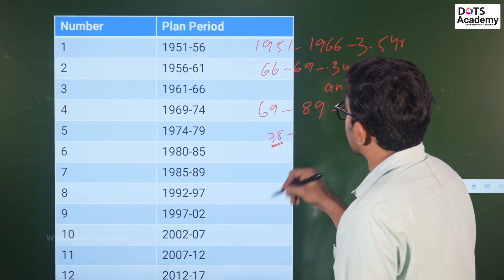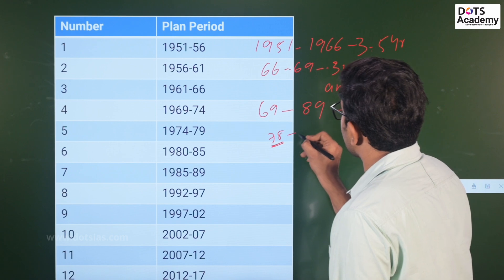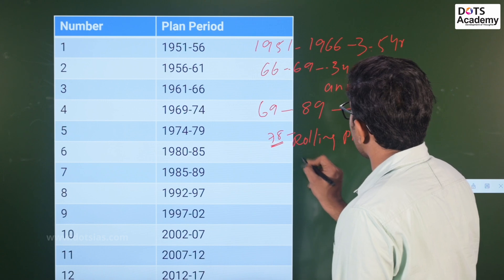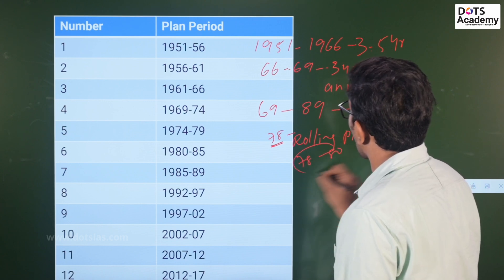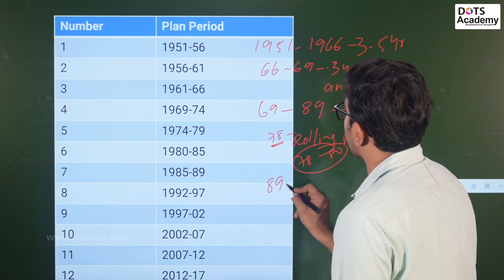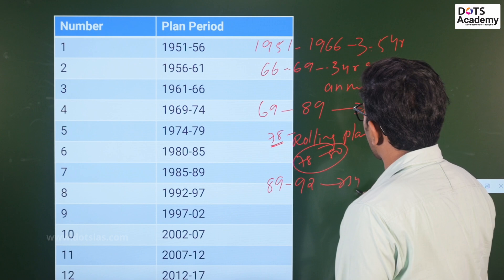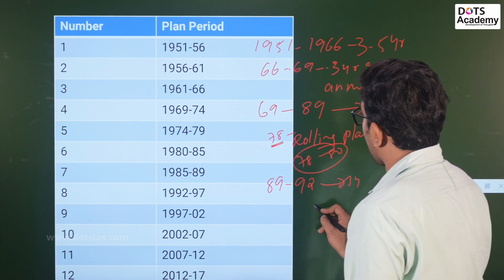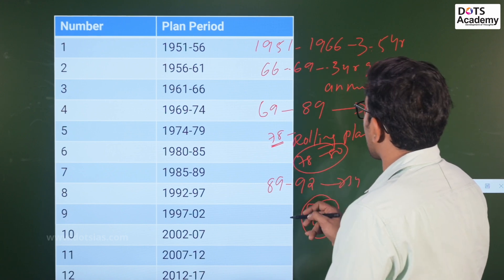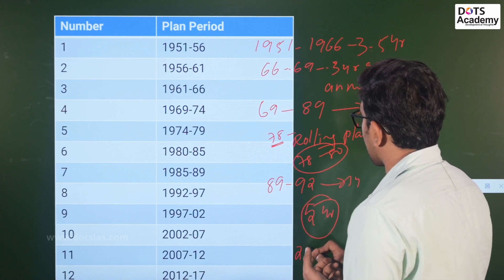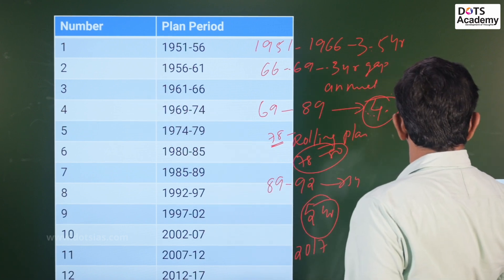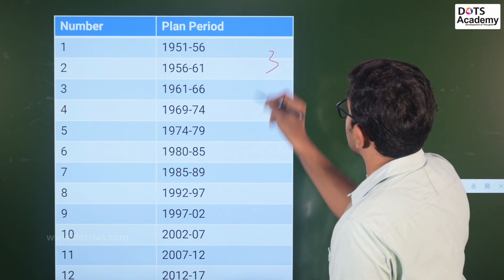They terminated the fifth five-year plan and introduced a rolling plan from 1978 to 1980. When we come back to 1989, there were three annual plans from 1989 to 1992. After 1992, five-year plans resumed, running up to 2017.